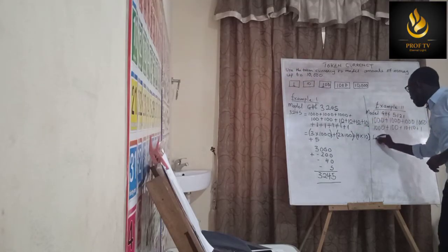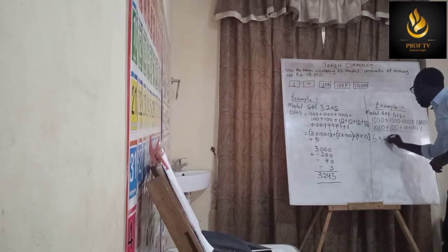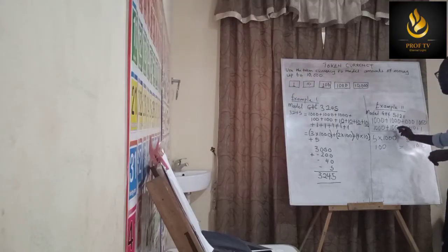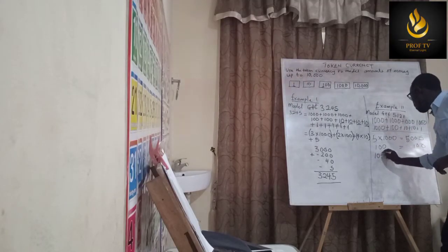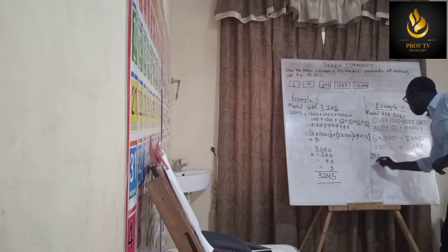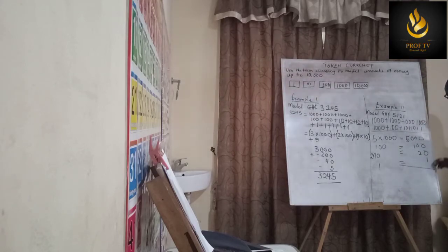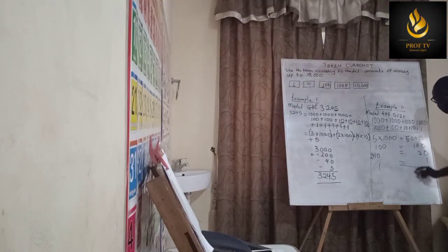For method two: five times one thousand gives five thousand; one times one hundred gives one hundred; two times ten gives twenty; and one remains one. When we sum up: zero plus zero plus zero plus one is one; zero plus zero plus two is two; zero plus one is one; and five gives five — so the answer is 5,121.